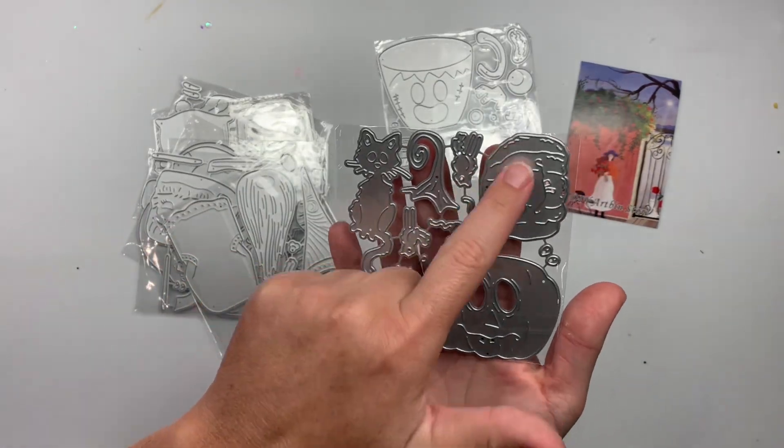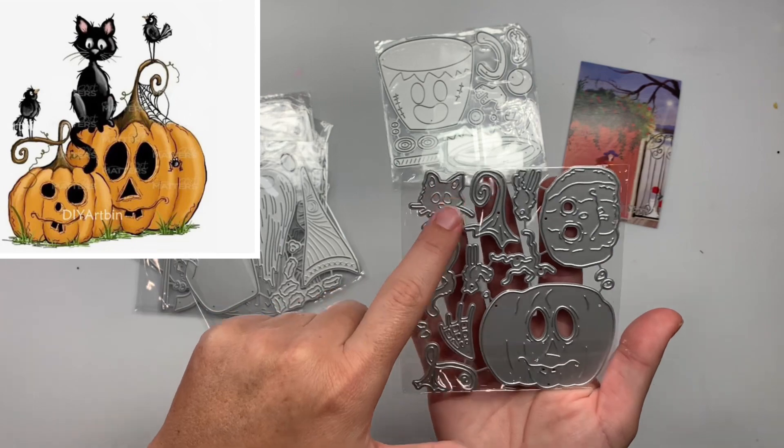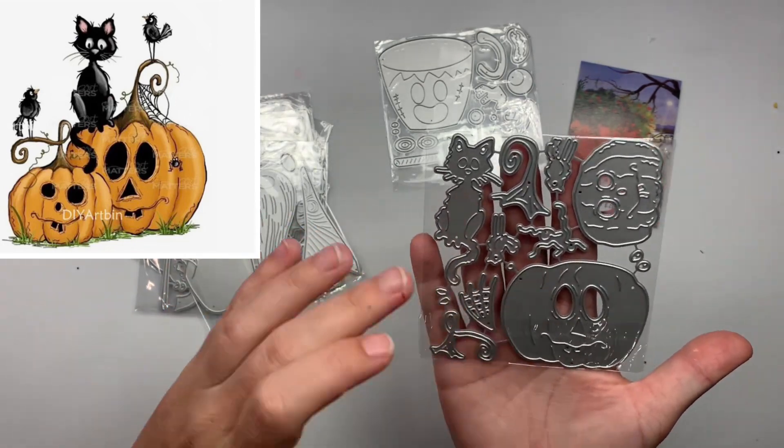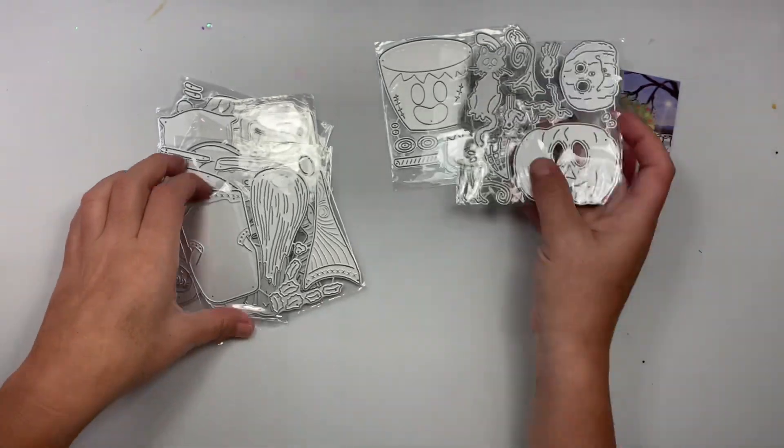This one I love the little pumpkins. They're like creepy. I love this creepy little cat. Kind of reminds me of those cat clocks where the tail swipes left and right. Very cute.